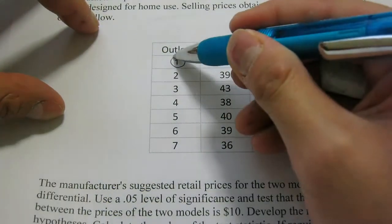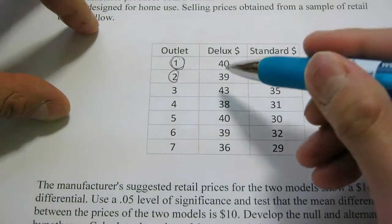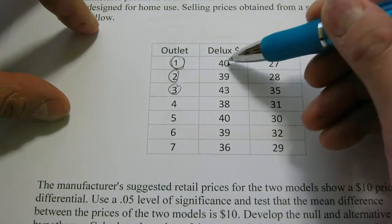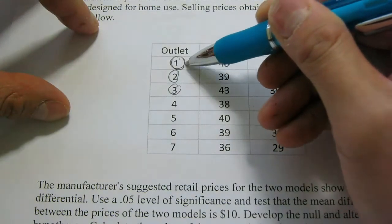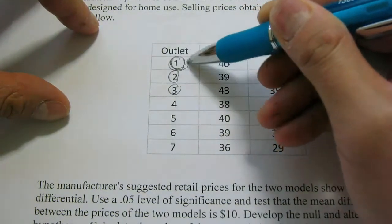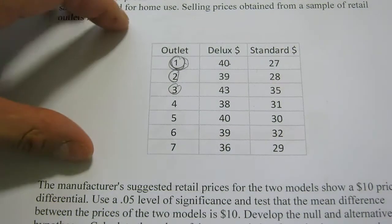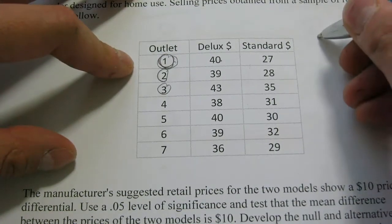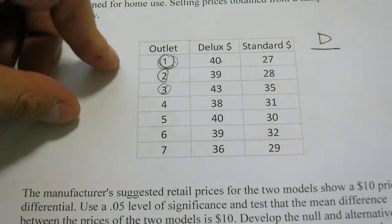Shop number one sells a deluxe and standard. Shop number two sells deluxe and standard. Shop number three also sells deluxe and standard, and so on. Each deluxe and standard observation is actually paired — related based on the fact that they're sold at the same shop, similar to the brother and sister example. The first thing we have to do is calculate what we call the difference, D, which is the price difference between deluxe and standard.